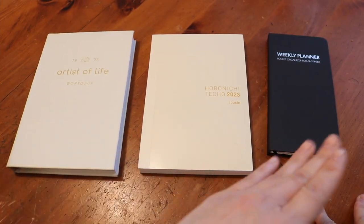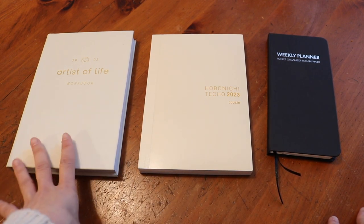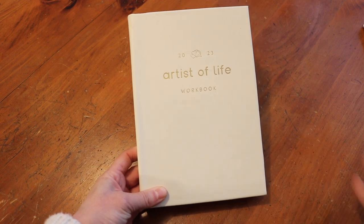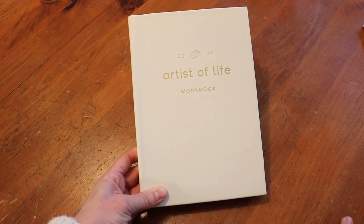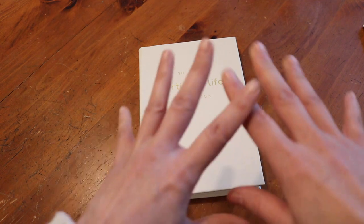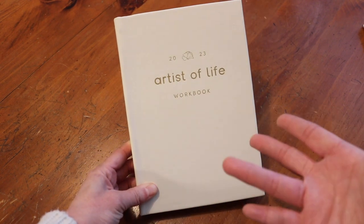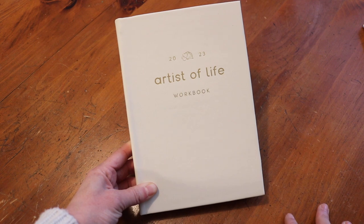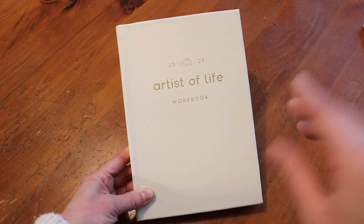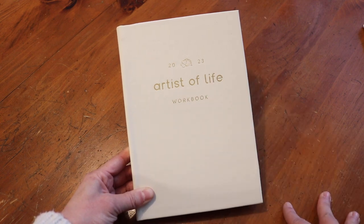Here's my official planner lineup for 2023. We're going to start with my artist of life workbook by Lavendaire. I followed Lavendaire, she's like a productivity and wellness manifestation mindfulness kind of channel. She came out with a goal setting workbook that she calls the artist of life workbook. I've always wanted it for the past few years, but stuck with my PowerSheets. For 2023, I decided to pick up the artist of life workbook and I got it in the cream color.